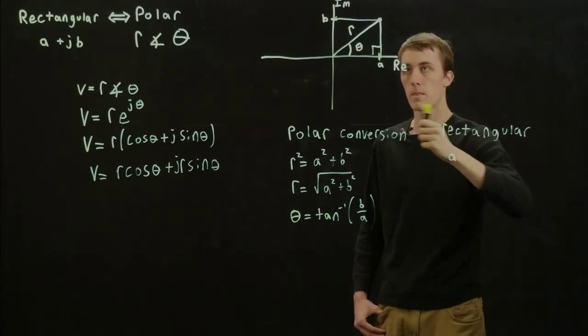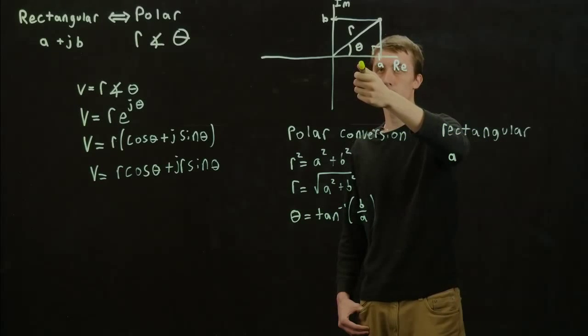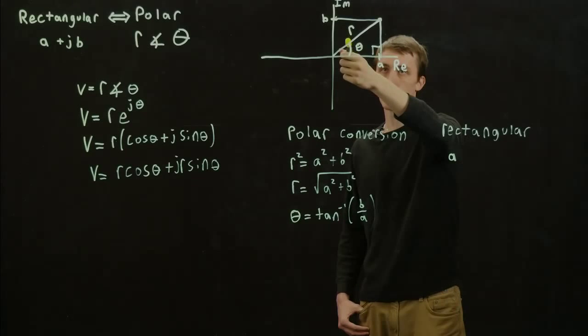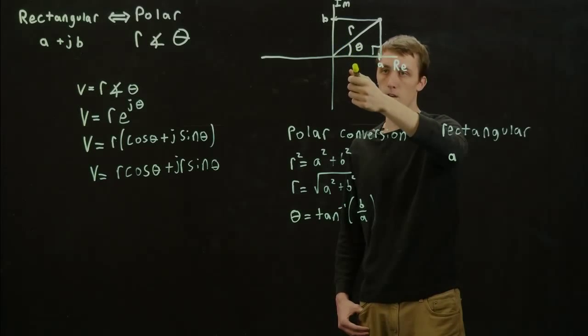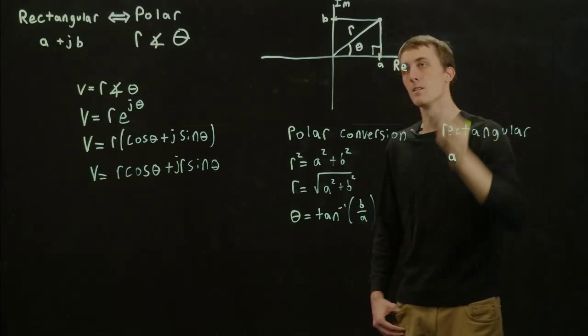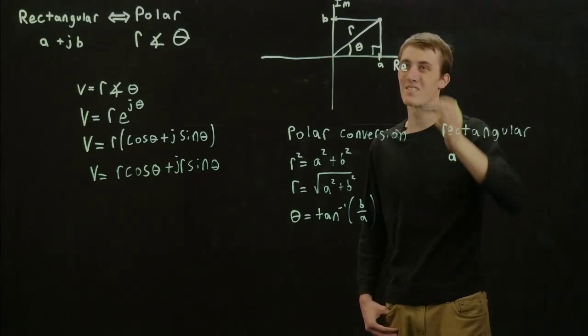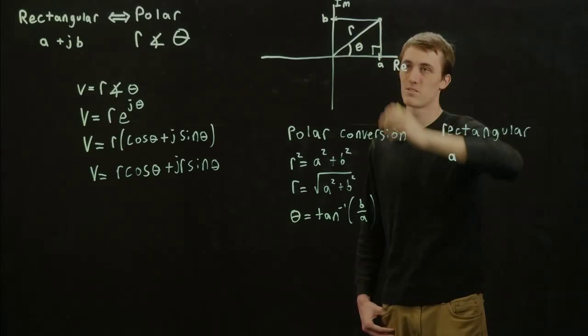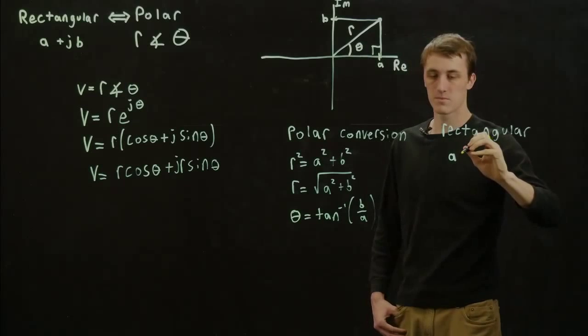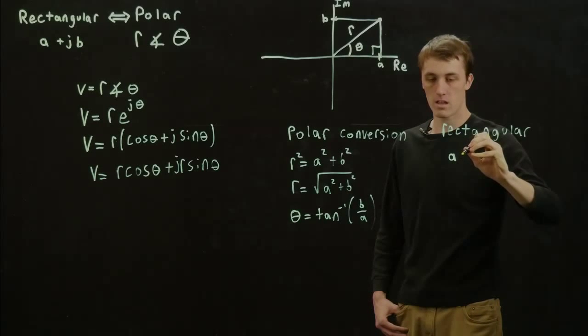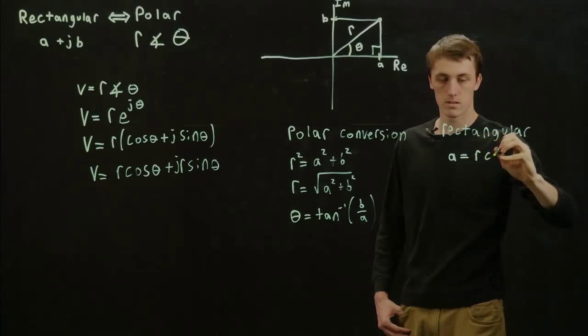If we want to find A, it would just be R times cosine of theta, because of how I remember it as just SOH CAH TOA, so adjacent over hypotenuse. So A is equal to R cosine of theta.